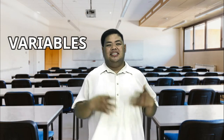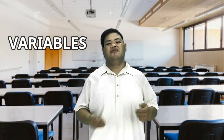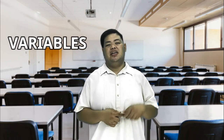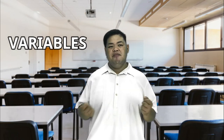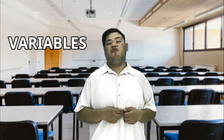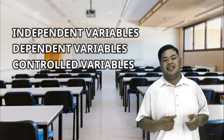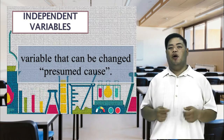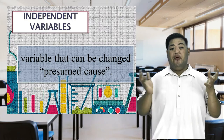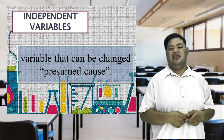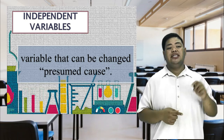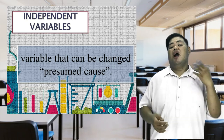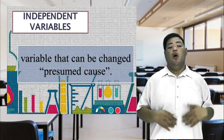Variables. The things that are changing in an experiment are called variables. A variable is any factor, trait, or condition that can exist in differing amounts or types. An experiment usually has three kinds of variables: independent, dependent, and control. Independent variables — variable that can be changed, presumed cause. The independent variable is the one that is changed by the scientist. If you change more than one variable, it would be hard to figure out what change is causing what you observe.